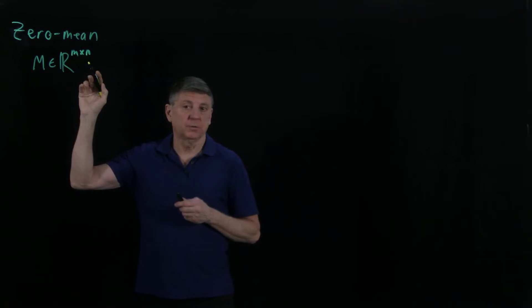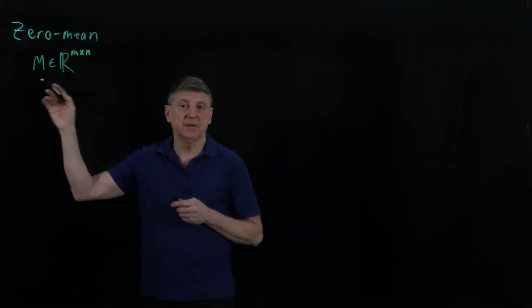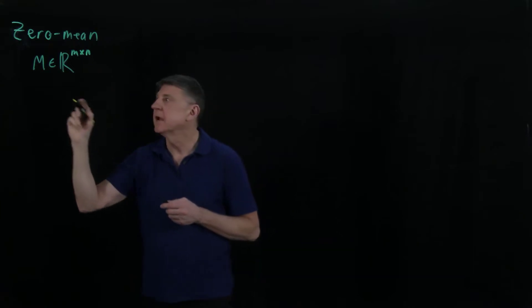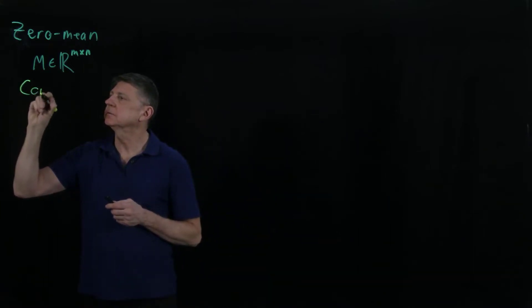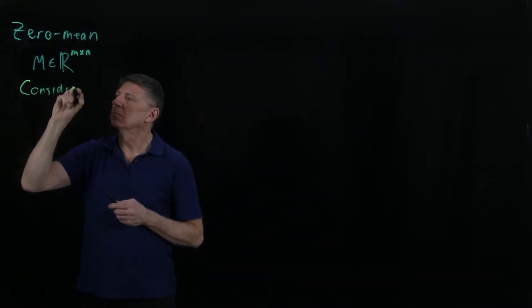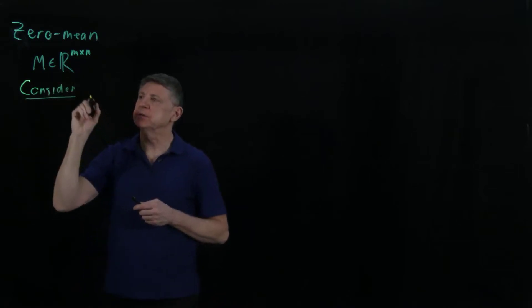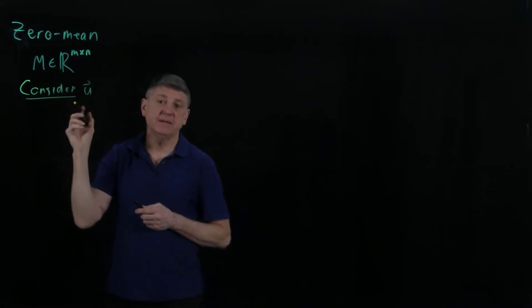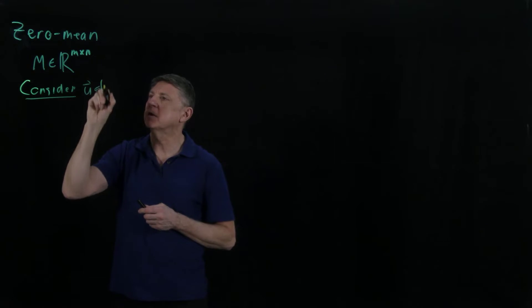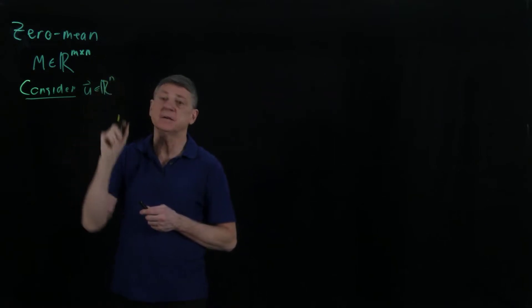Let's recall that we have zero mean data in a matrix M, with M observations and N variables. Now let's consider an input to this matrix, any vector U with all real numbers and N entries.